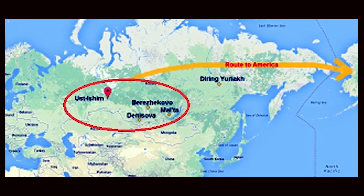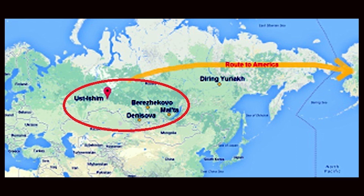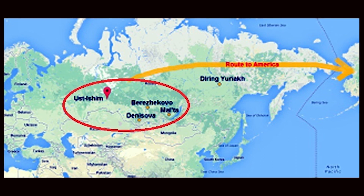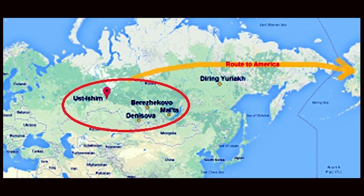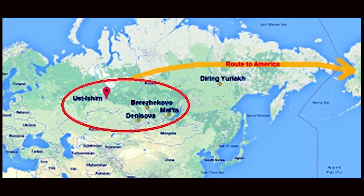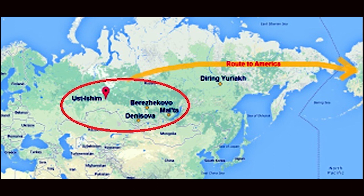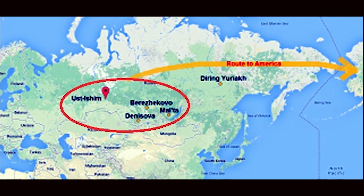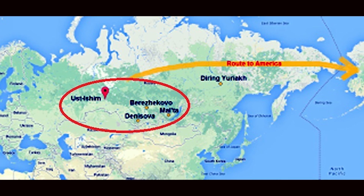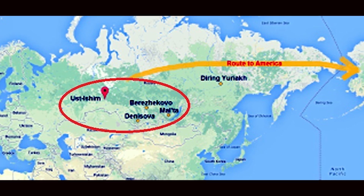This upper Baikal region is particularly interesting because bones of people living there were found dating back 45,000 years. There is also the Malta region, with the city of Malta — not Malta in the Mediterranean, but Malta in Asia — where very ancient small figurines were found.